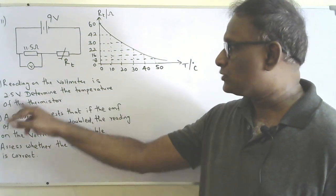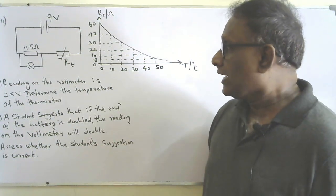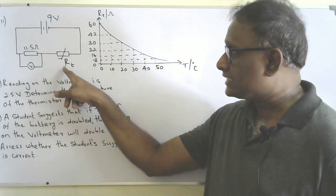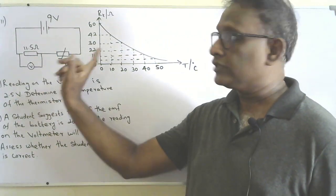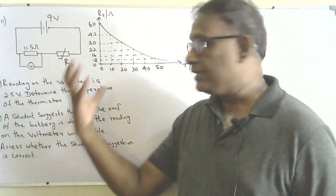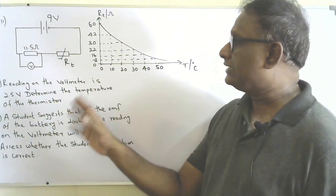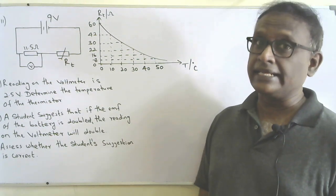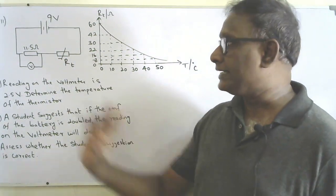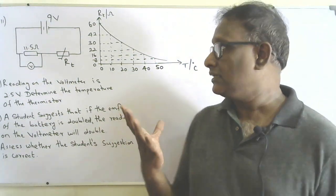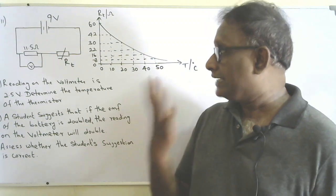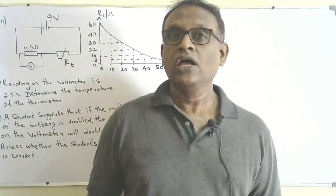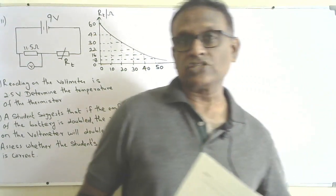A graph is given showing how the thermistor's resistance varies with temperature in Celsius. The first part: the voltmeter reading is 2.5 volt (voltage across 11.5 ohms). Determine the temperature of the thermistor. Depending on temperature, resistance changes, and the 9 volt is divided across the two components at the ratio of resistance. The voltmeter is ideal, so we use the potential divider method to find Rt.